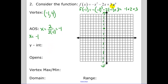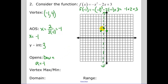Now the y-intercept is the c value, which is 3. Plot that point. The y-intercept is one unit to the right of the axis of symmetry, so we go 1 unit to the left to get the symmetric point. We open down because a is negative 1, which is less than zero, so the graph curves downward like that.